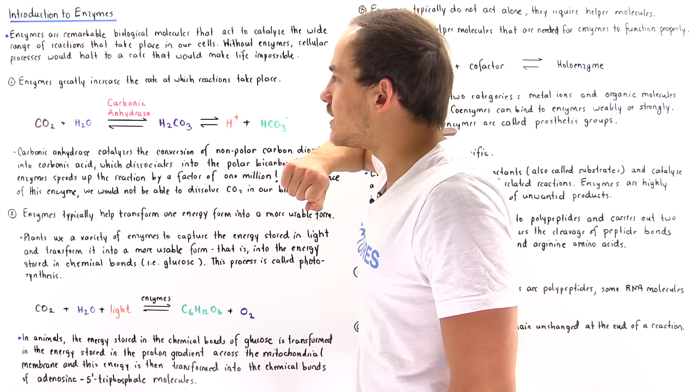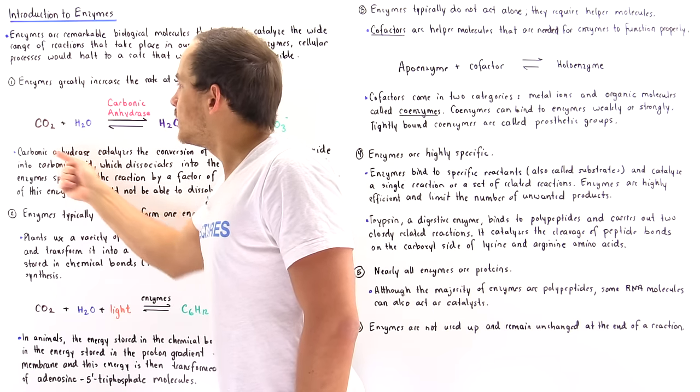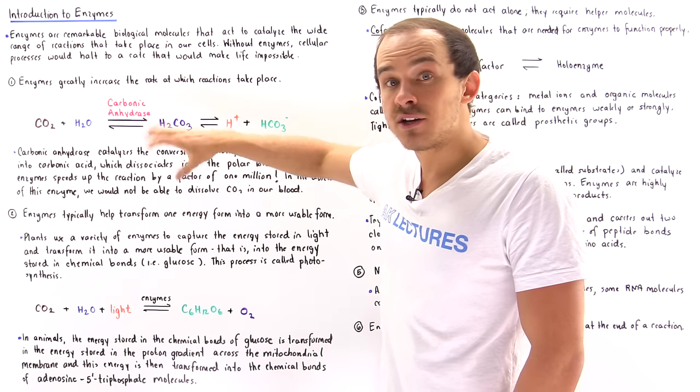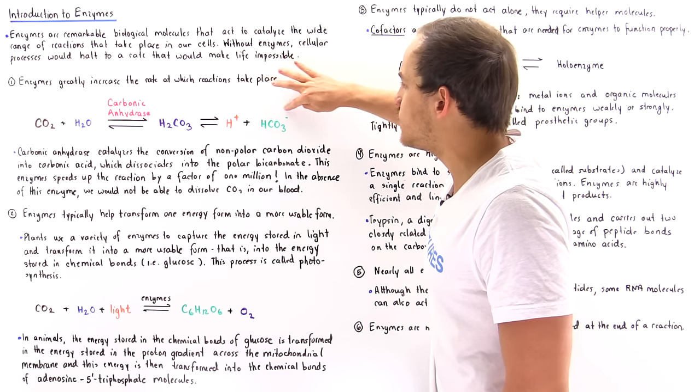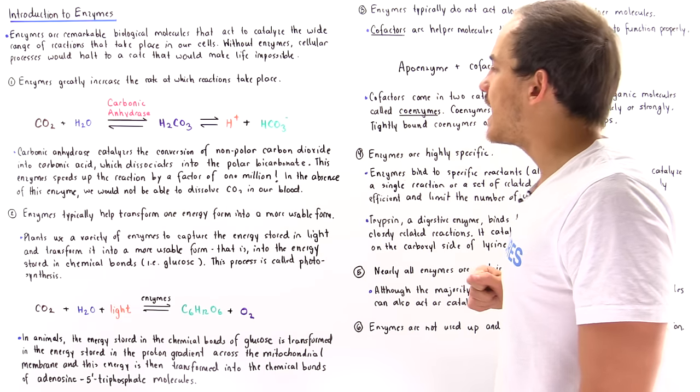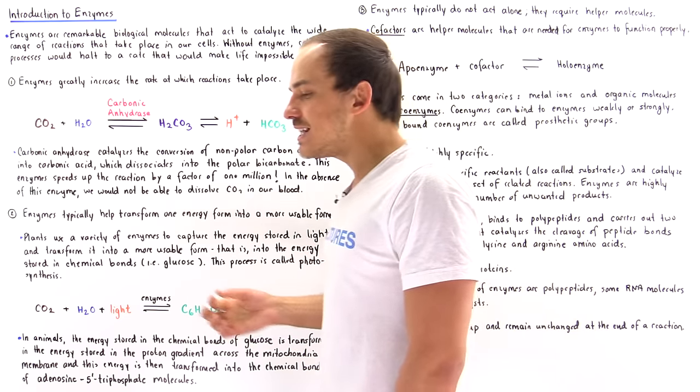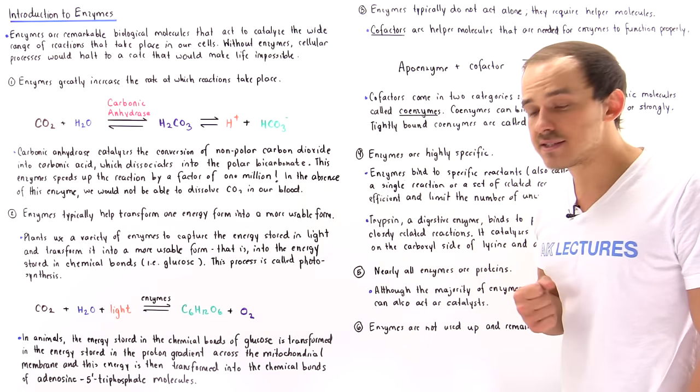Carbonic anhydrase essentially hydrates. So it combines carbon dioxide with water to produce carbonic acid, and carbonic acid being a relatively strong acid will dissociate into these two polar ions: hydrogen ions and bicarbonate ions.